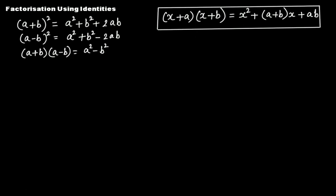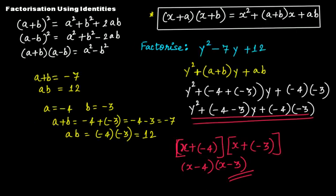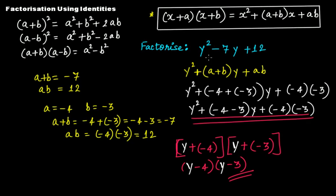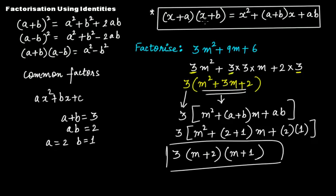Just want to check — in the third example, I used x instead of z as the variable. I'm sorry for that — it should be z throughout, since our variable is z. Similarly in the second example, it should be y, not x. The key point is that we just have to relate to the identity — our original variables must not change. So this was all about factorization using identity 4, and we'll discuss more in our next video tutorial.